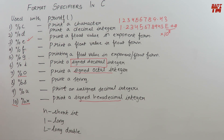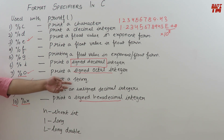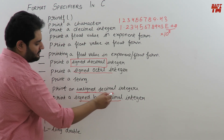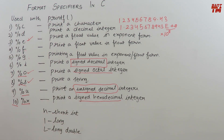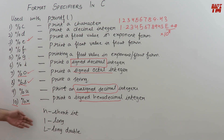%o prints a signed octal integer. %s prints a string — and in printf, %s can print both a string of characters and a string of words, unlike in scanf where %s only scans a string of characters and %[...] was needed for a string of words. %u is used for printing an unsigned decimal integer. The modifiers h, l, and L work the same way as in scanf — for example, %lf prints a double value and %Lf prints a long double.